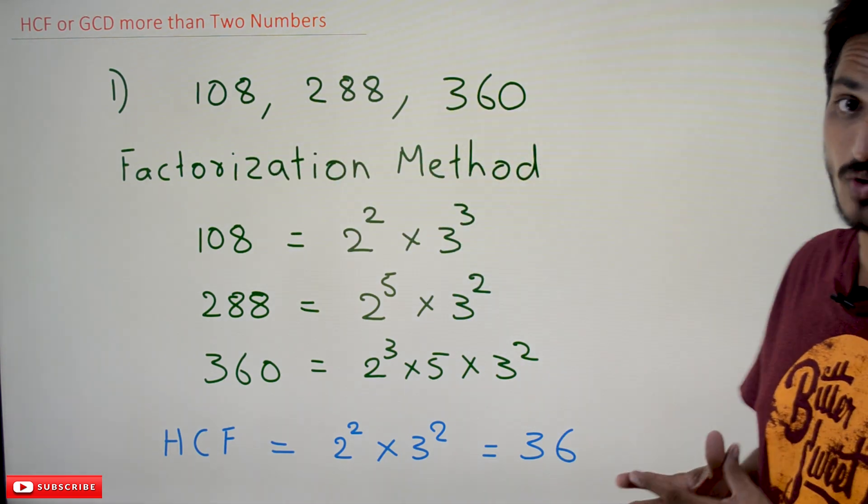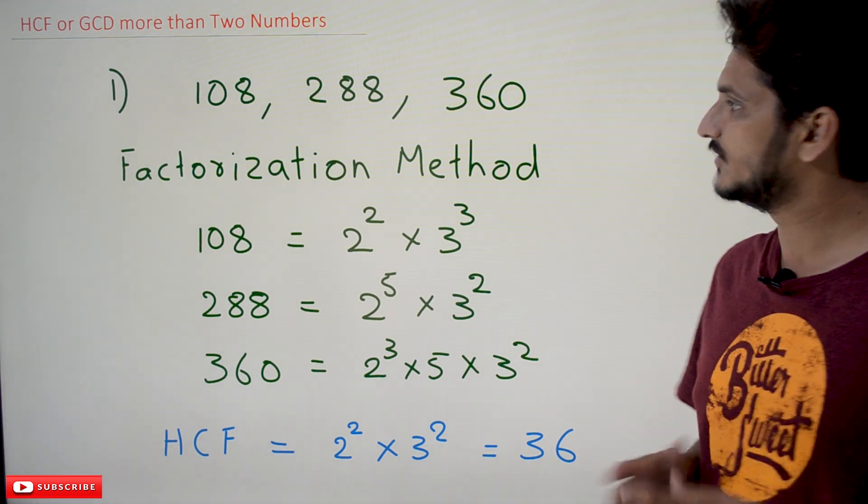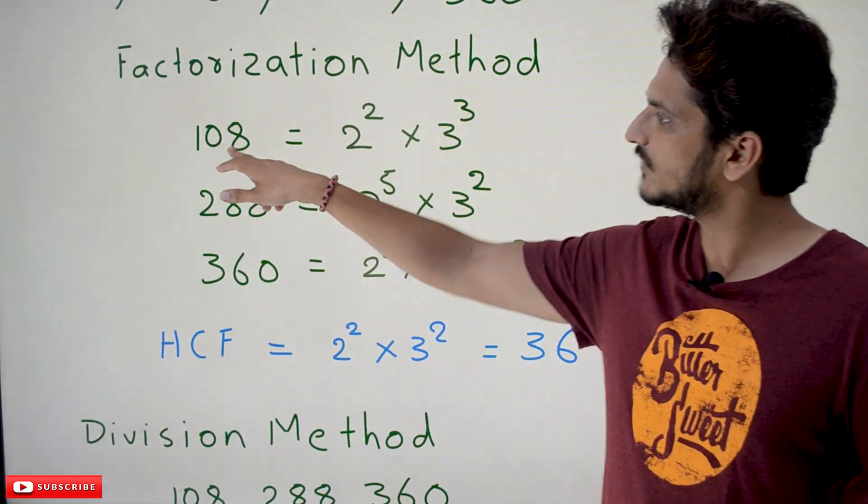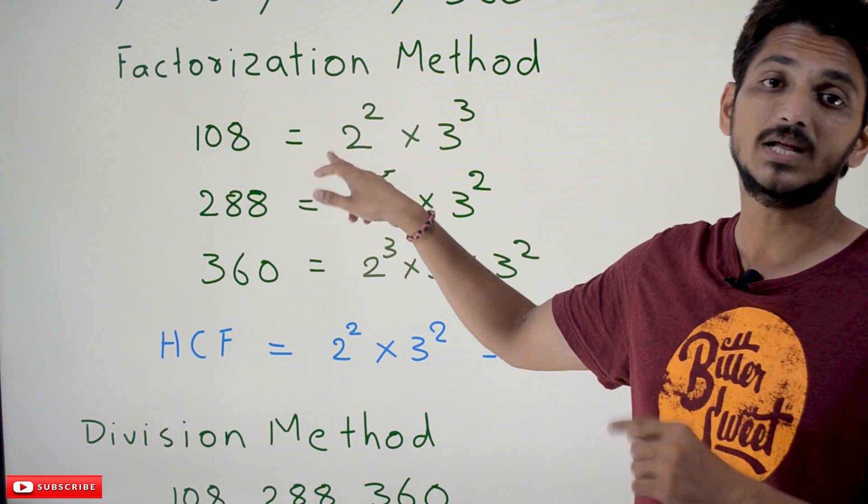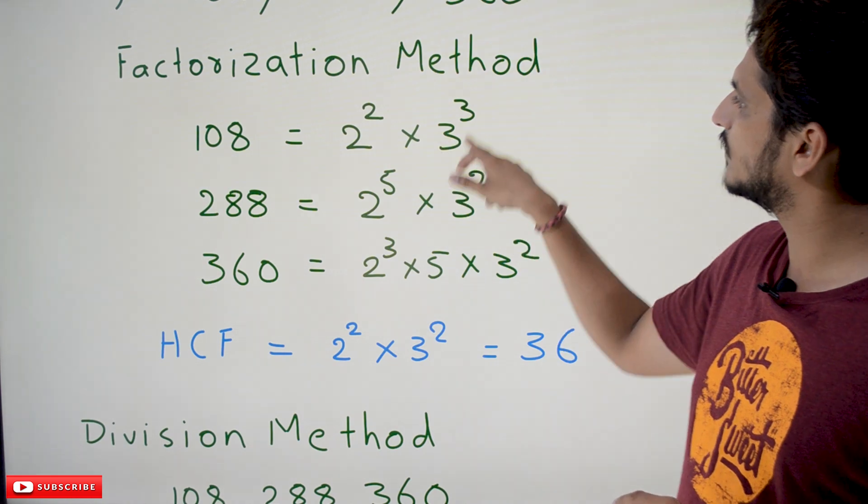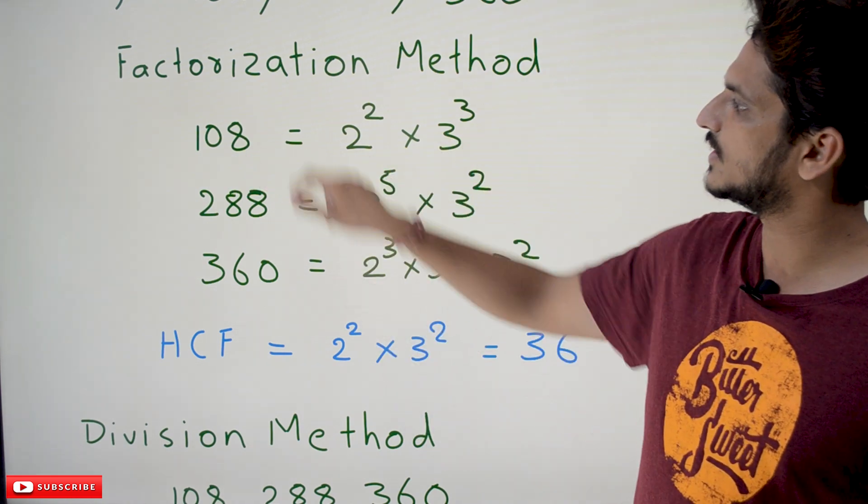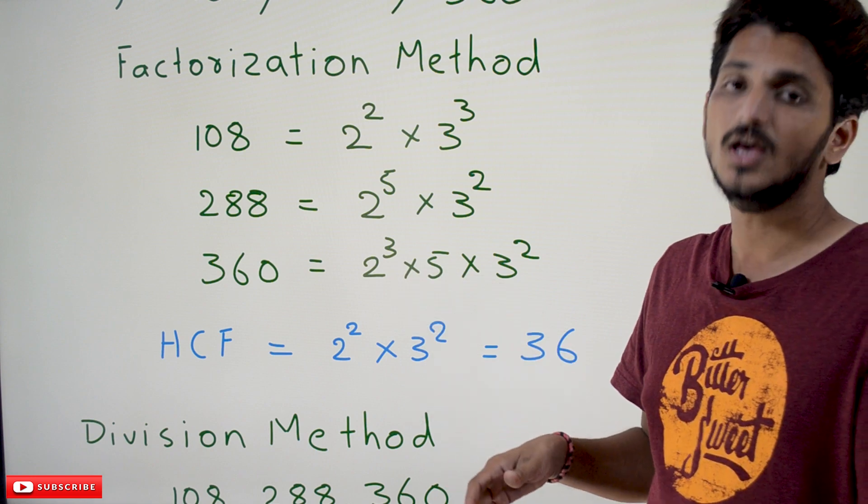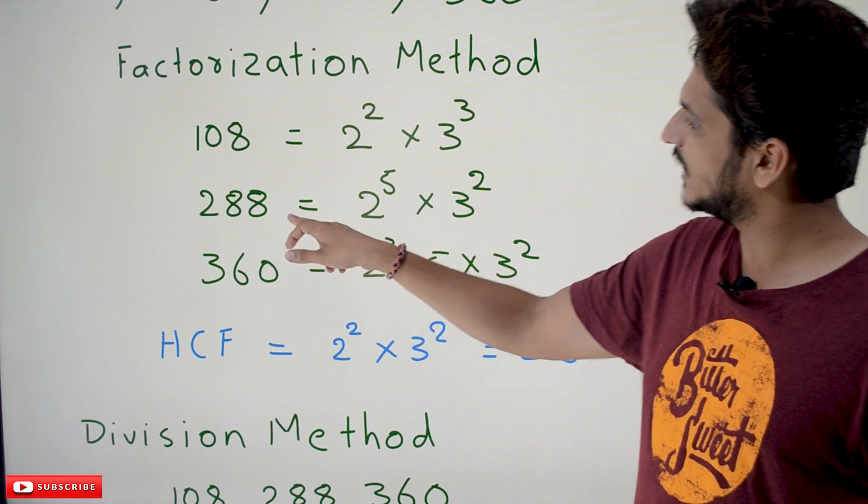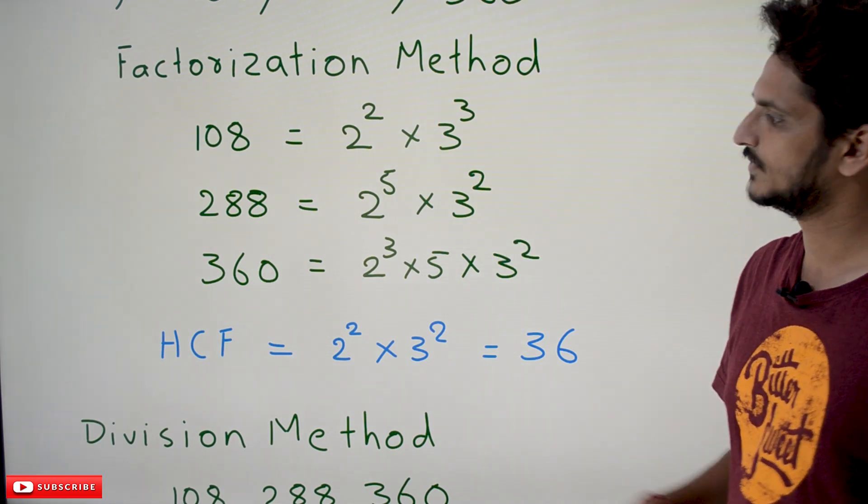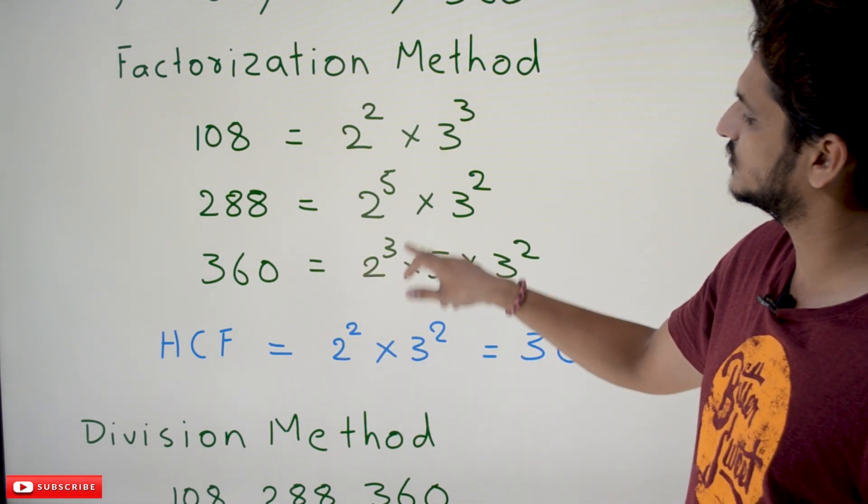In factorization method, the first step is to write the numbers in the form of multiples of prime factors. 108 can be written as 2 squared multiplied by 3 cubed. 288 can be written as 2 to the power 5 multiplied by 3 squared. Similarly, 360 can be written as 2 cubed multiplied by 5 multiplied by 3 squared.